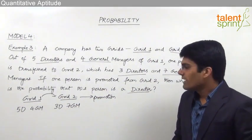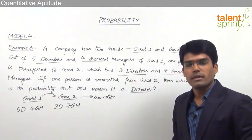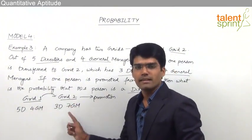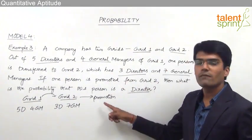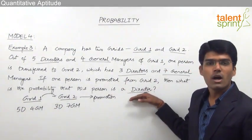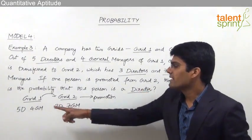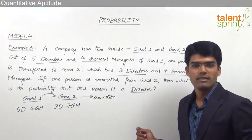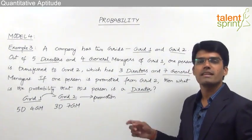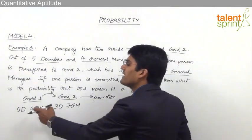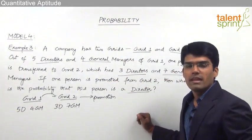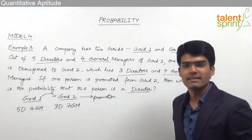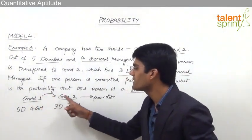There are 2 possible cases when transferring a person from Grid 1 to Grid 2: it can either be a director or a general manager. In both cases, the person who gets promoted should be a director. So the two cases are: a director is transferred and a director gets promoted, or a general manager is transferred but a director still gets promoted.